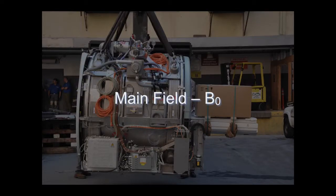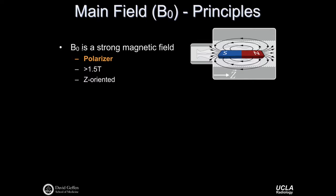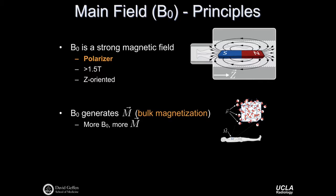Graphically, we can depict the main magnetic field as a north-south facing magnet oriented along the z-axis of the scanner, generally the foot-to-head direction. The B0 field serves to polarize the underlying magnetic spins such that we get a coherent population predominantly in the spin-up position relative to spin-down. The magnetic field strength is typically greater than 1.5 Tesla. The more B0, or the stronger the B0 field, the more bulk magnetization we have available for forming images, and the stronger the signals will be for higher quality images.